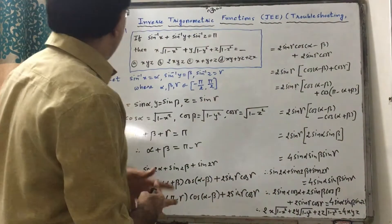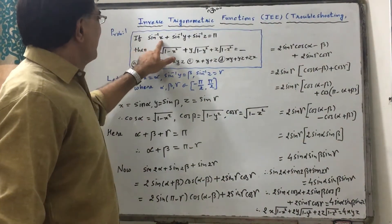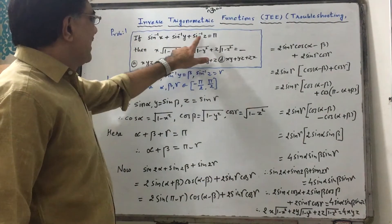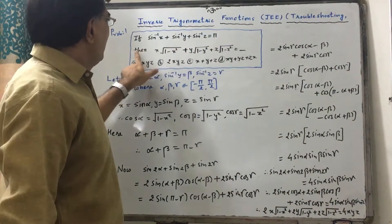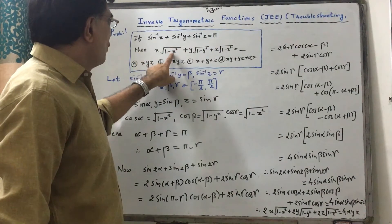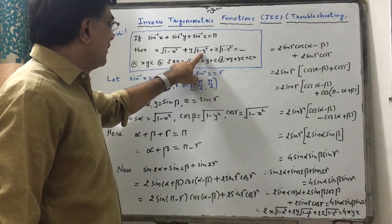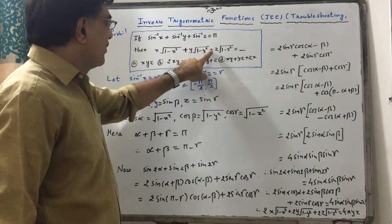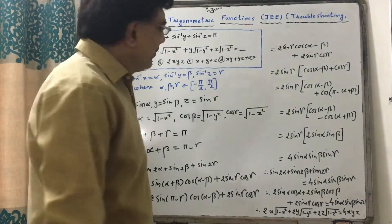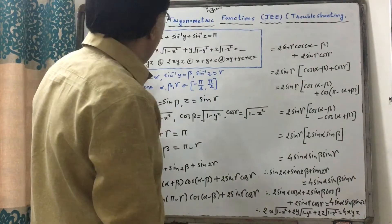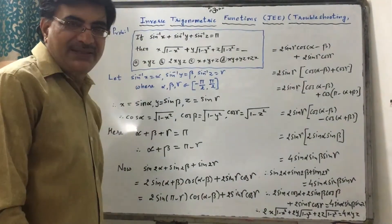So this is the problem: if sin⁻¹x + sin⁻¹y + sin⁻¹z equals π, then we have to find the value of x·√(1−x²) + y·√(1−y²) + z·√(1−z²). We have to find out the correct choice.